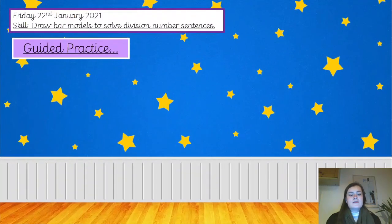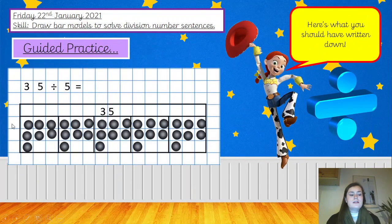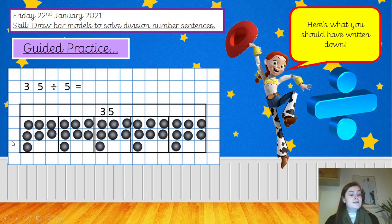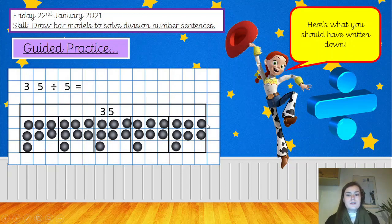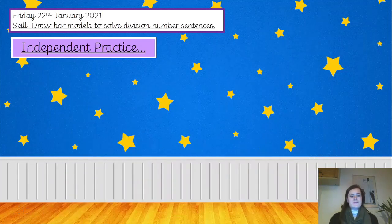Well done. Hopefully this is what your bar model looks like — 35 divided by 5. We've drawn our bar with a ruler, made sure each bar at the bottom is the same size, got your total number at the top, and then you've counted one group to find your answer. Hopefully you wrote the number 7 at the end of your number sentence, and you've checked it by counting all of the other groups to confirm they are equal and that you had the right amount of counters.